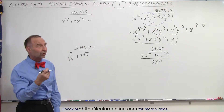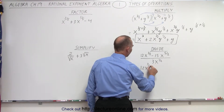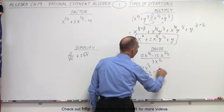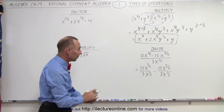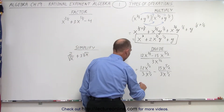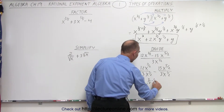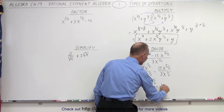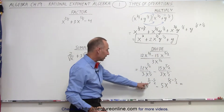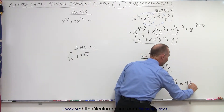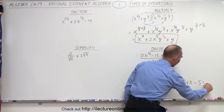Simply, we use the same technique — we just have to watch how we handle the exponents. When we divide, we can write this as 12x to the 3 halves divided by 3x to the 1 half, minus 15x to the 5 halves divided by 3x to the 1 half. Then 12 divided by 3 is 4. And x to the 3 halves divided by x to the 1 half, we subtract exponents: 3 halves minus 1 half. Minus 15 divided by 3 is 5, and here again we subtract exponents: 5 halves minus 1 half. So 3 halves minus 1 half is 2 halves, which is 1 — we get 4x to the first power, minus 5x to the second power.